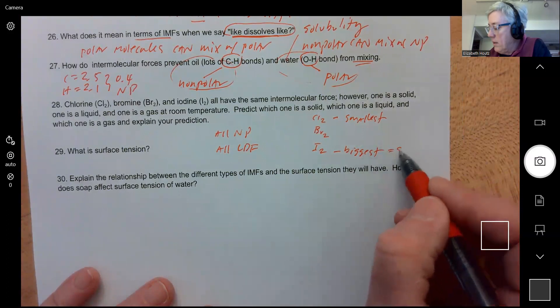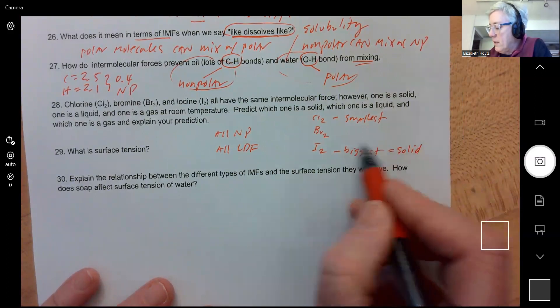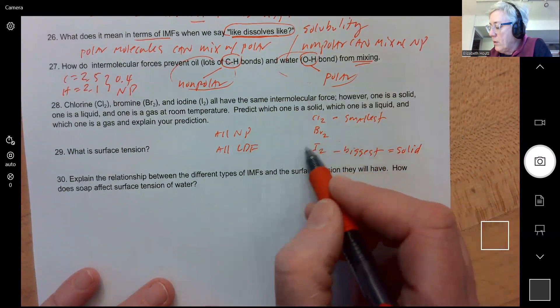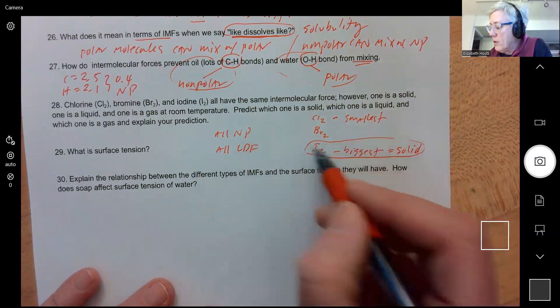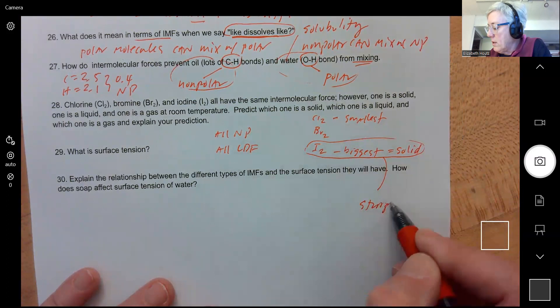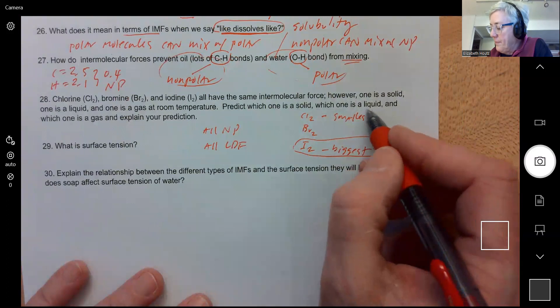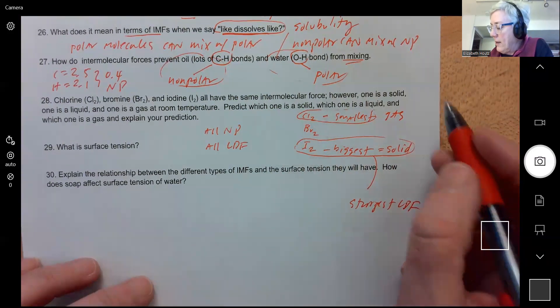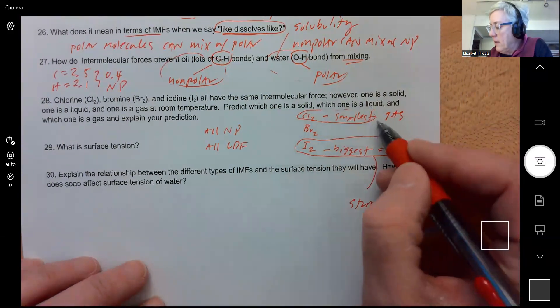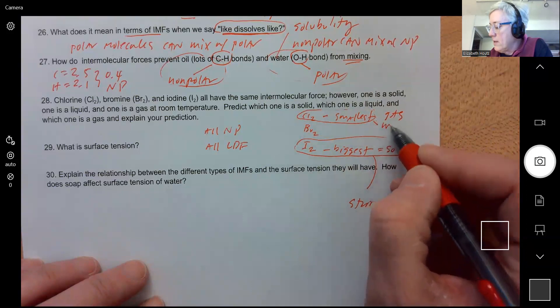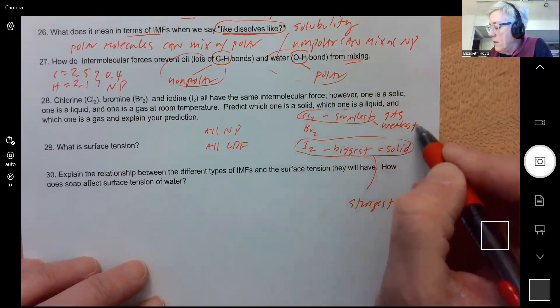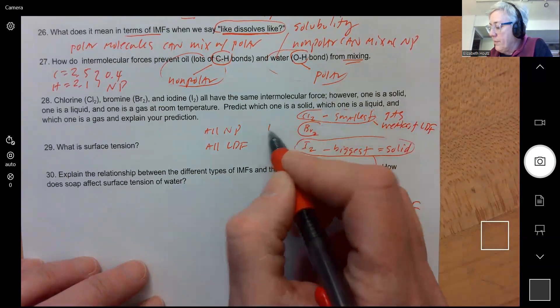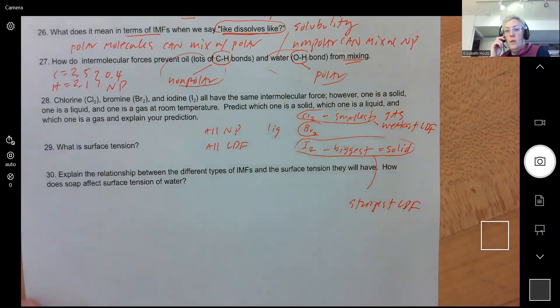Well, this one is going to be a solid because if they're all non-polar, the larger molecule has more electrons. So that is going to have the strongest London dispersion forces, which can hold it together as a solid. Chlorine is the smallest, so it is going to be a gas because gases have very weak London dispersion forces. So I'll say weakest London dispersion forces, and then bromine is a liquid. It's in the middle.